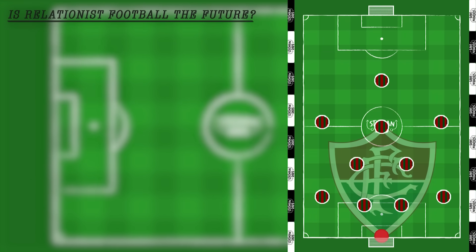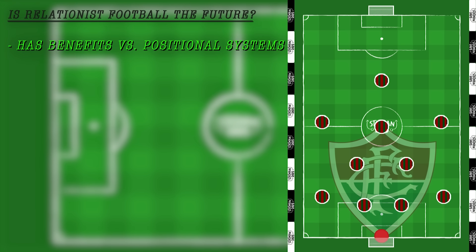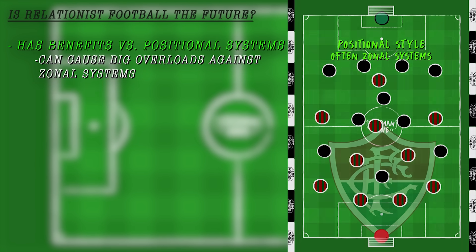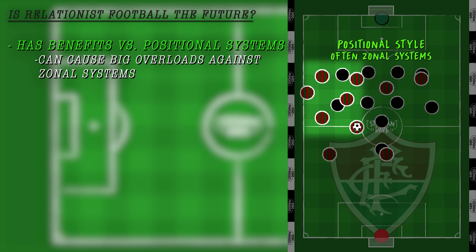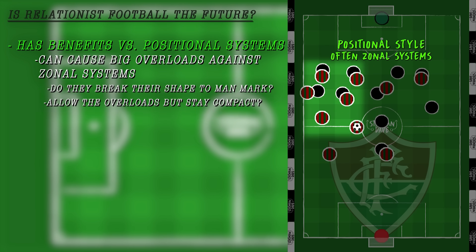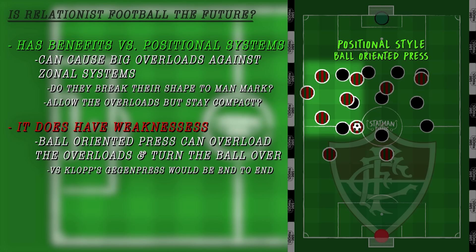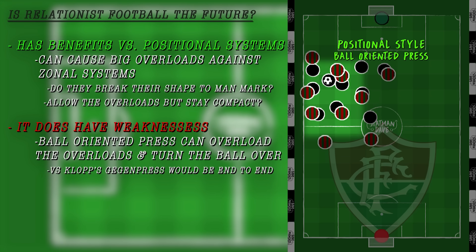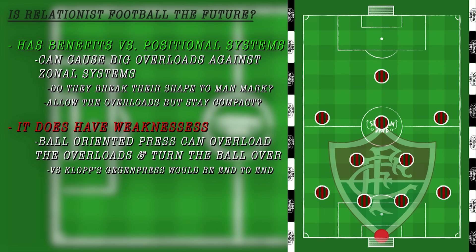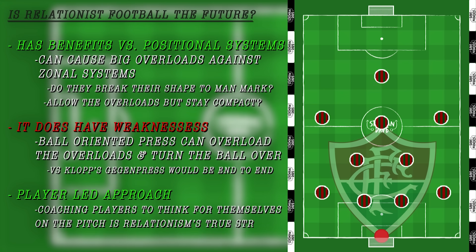So is relational play the future of attacking football? The true answer is yes and no. There are benefits to this style, especially against positional teams who prefer a zonal style in both attack and defence — the crazy overloads of a relational approach can cause major problems. However, a relational approach can be overcome by a ball-orientated, gegenpressing style like Jürgen Klopp's Liverpool or Borussia Dortmund, who could match the relational overload and flood the area around the ball to force turnovers. Football is very much a complex game of rock-paper-scissors, with natural strengths and weaknesses between styles. This player-led approach provides players with the knowledge and skills to overcome fresh challenges within the game, and this is where the true strength of the style lies.